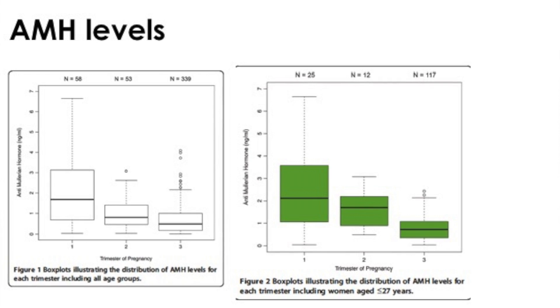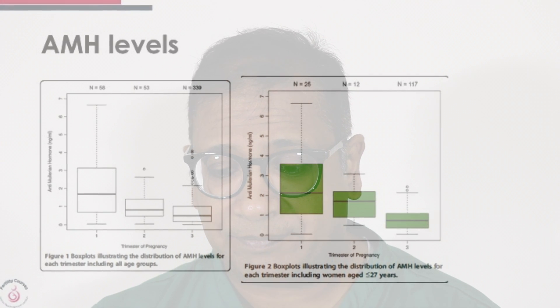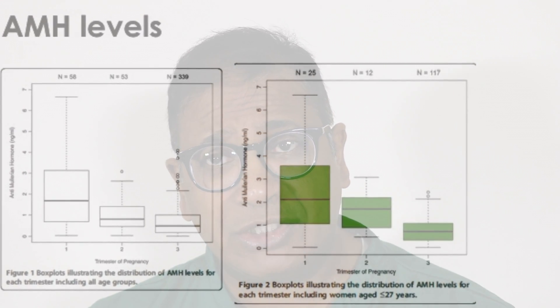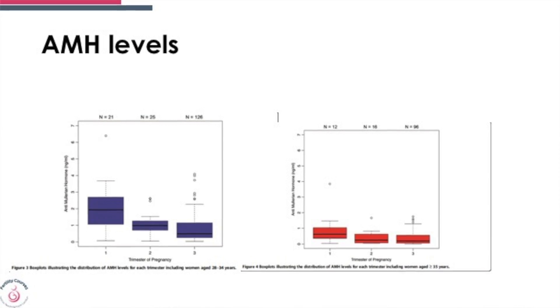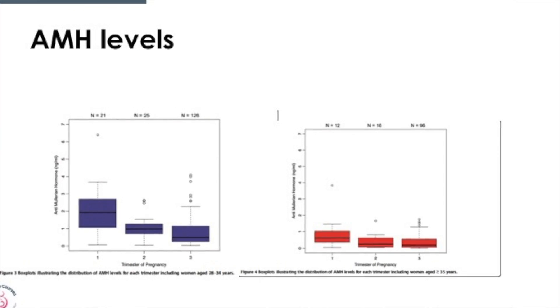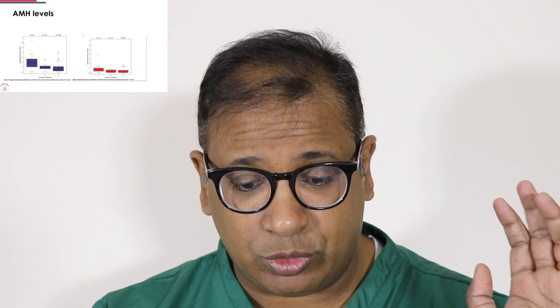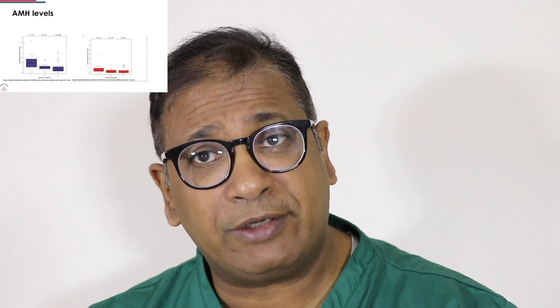Looking at the AMH levels across all the data, AMH levels started declining in each trimester. In women less than 27 years, the decline of AMH was dramatic between the first and the second trimester. Looking at those between 28 to 34 and 35, that dramatic drop continues, though it is less profound as a woman gets older.